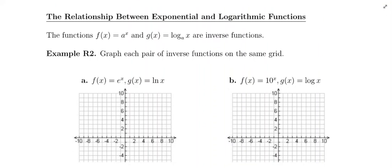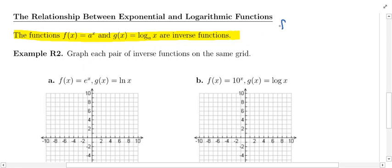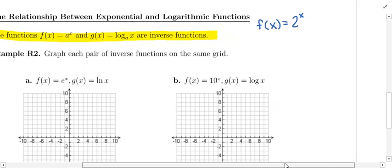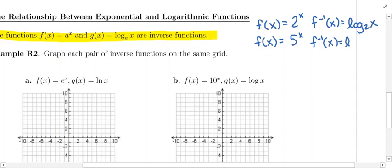Here is the key relationship: the function a^x and the function log base a of x are inverse functions. For example, if I gave you the function 2^x — that's an exponential function of base 2 — its inverse function is going to be log base 2 of x. It's basically the log function that has the same base. Or if I gave you f(x) = 5^x, the inverse function is going to be log base 5 of x, and so on.